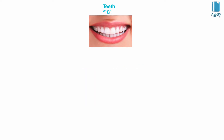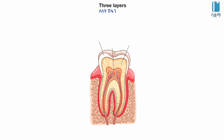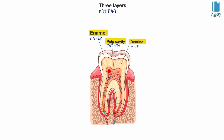A tooth has two main parts: the crown and the root. Inside the tooth is the pulp, which contains blood vessels and nerve endings.